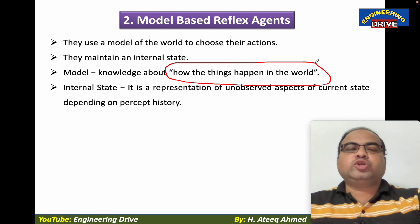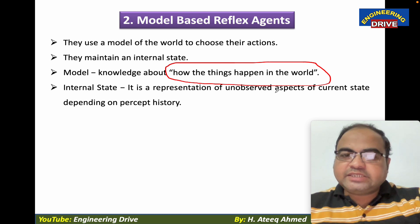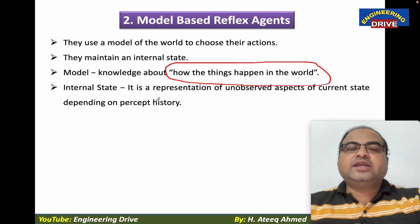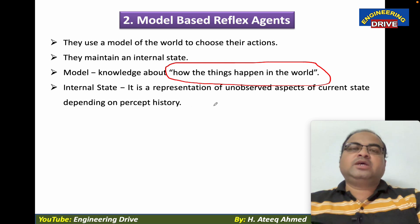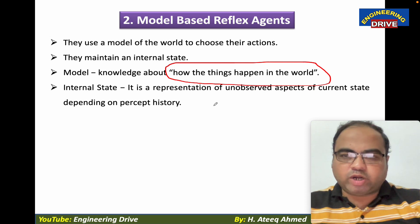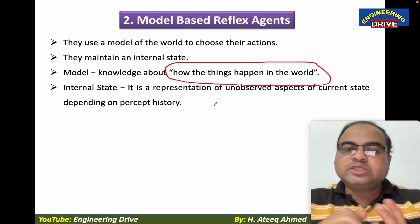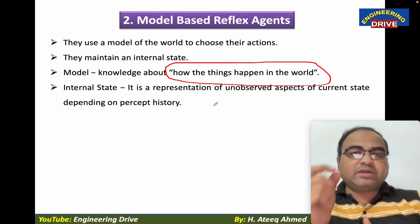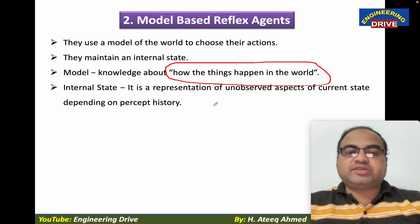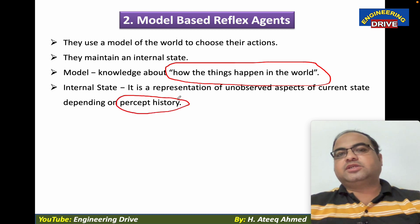Internal state here refers to a representation of unobserved aspects of the current state depending on percept history. This is also a unique feature of model-based agents. Not only will they consider the model of how things happen in the world, they will also consider past percept history. This is very important.